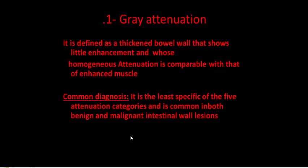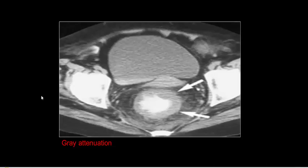Gray attenuation is defined as a thickened bowel wall that shows little enhancement, with enhancement attenuation compatible with that of enhanced muscle. This is the least specific of the five attenuation categories and is common in both benign and malignant conditions. Gray attenuation of the wall is combined with surrounding muscles.